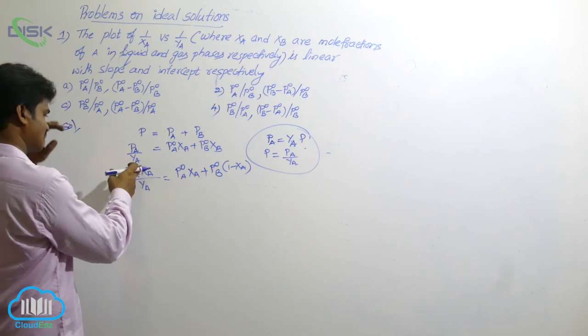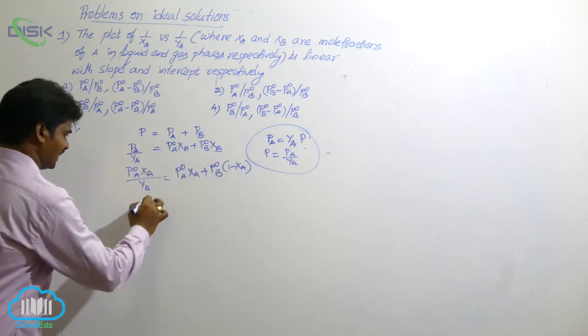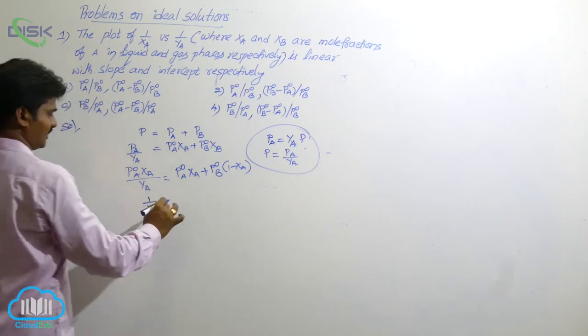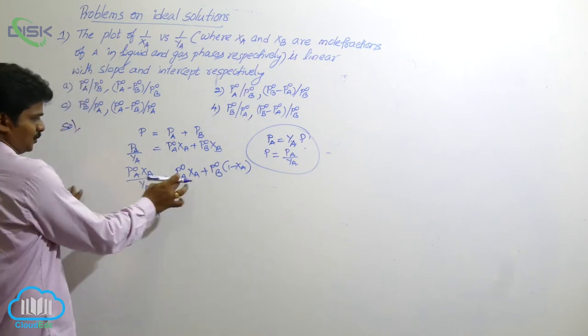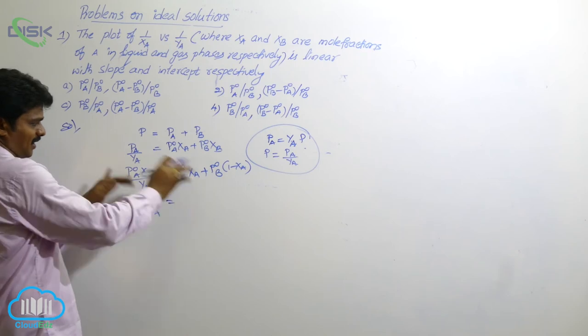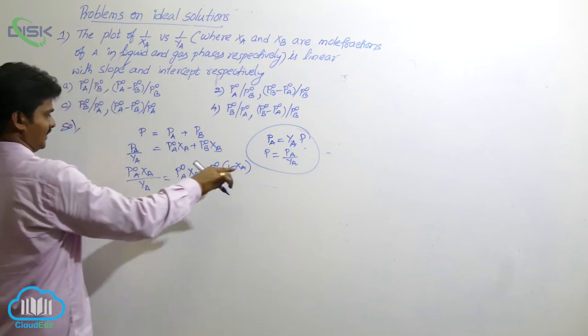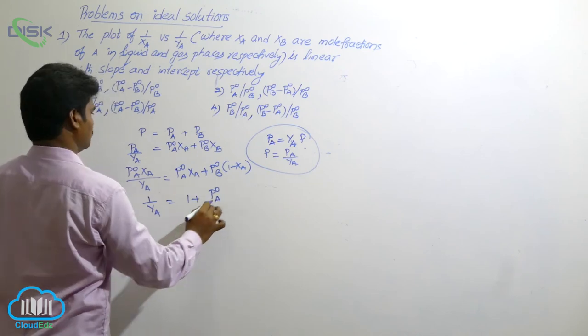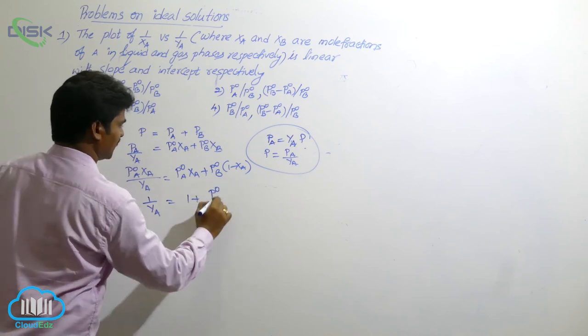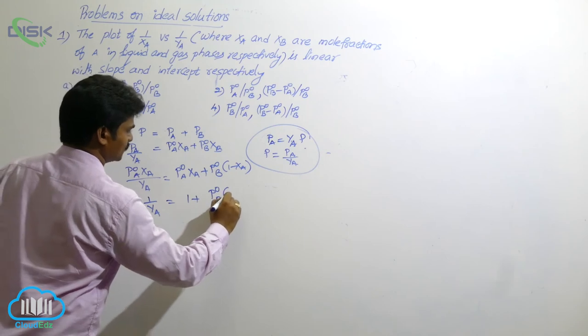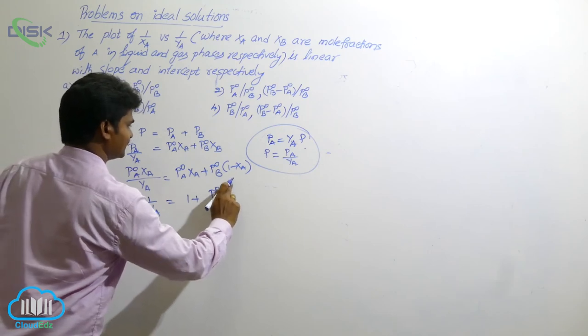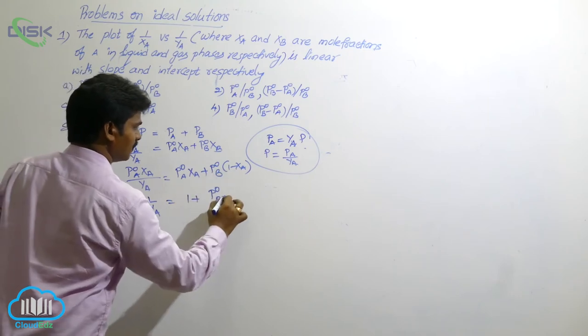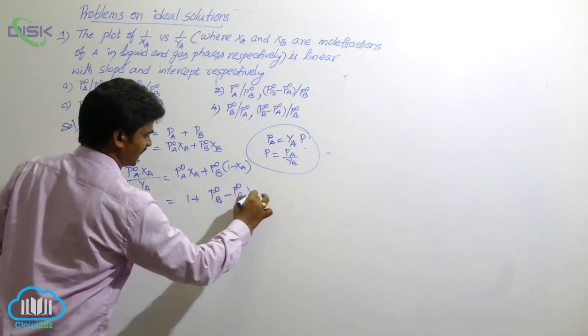Then XB is equal to 1 minus XA. So take these terms, that's it. Then here 1 by YA will be left over. Then 1 by YA is equal to P naught A, XA by P naught A. So P naught A, XA, that means 1 plus. Then P naught A, P naught A, XA. This is P naught B into 1 minus. So let us expand this one. This is P naught B minus P naught B, XA.